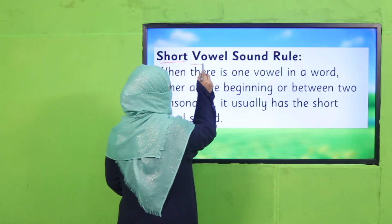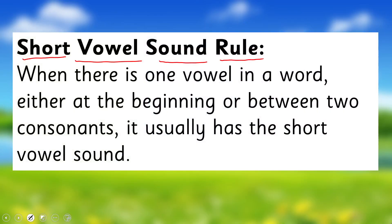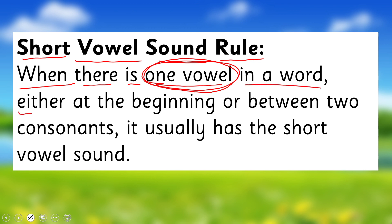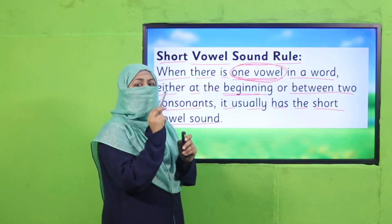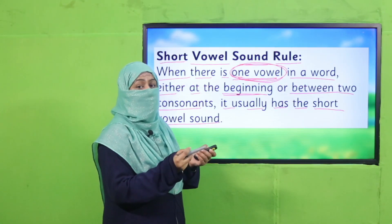The first rule is the Short Vowel Sound Rule. When there is only one vowel in a word — either at the beginning or between two consonants — it usually has the short vowel sound. So when there is only one vowel in a word, wherever it is — at the beginning, in the middle, or between two consonants — its sound will be the short vowel sound.